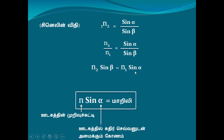Now n2 into sin beta times n1 into sin alpha. If you look at this, it's a 3. So how do we say this?